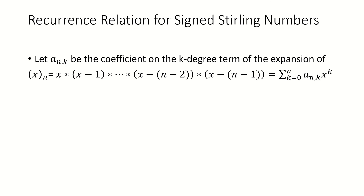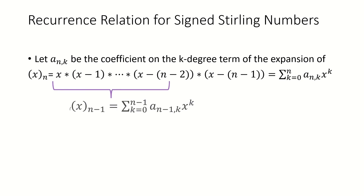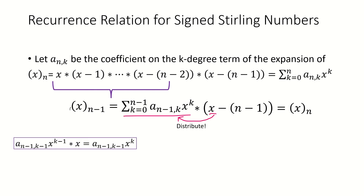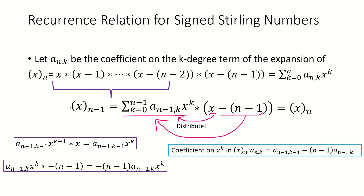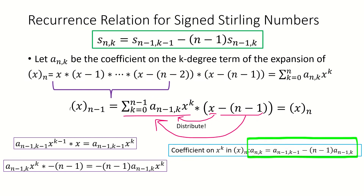We can prove a recurrence relation for the signed Stirling numbers using the same approach as before. Let a sub n k be the coefficient on the kth degree term of the nth falling factorial. We obtain the nth falling factorial from the n minus 1th by multiplying by x minus n minus 1. Distributing, there are two degree-k terms: one from multiplying x by the k minus 1 degree term, and one from multiplying negative n minus 1 by the k degree term. This gives a sub n k equals a sub n minus 1 k minus 1 minus n minus 1 times a sub n minus 1 k. Combined with initial values, this recurrence allows us to find any signed Stirling number.